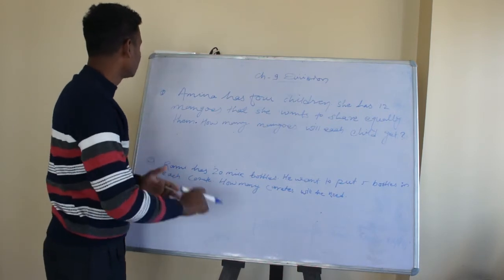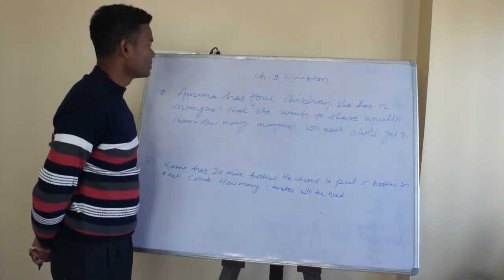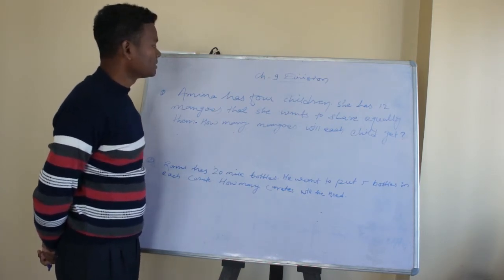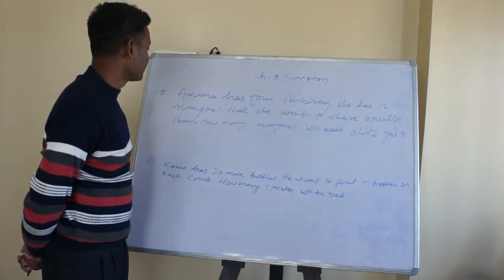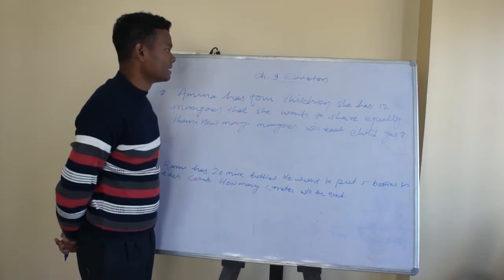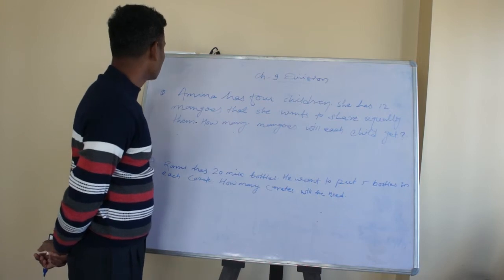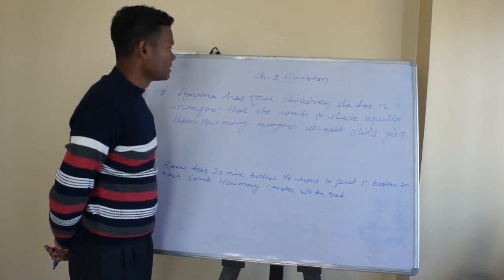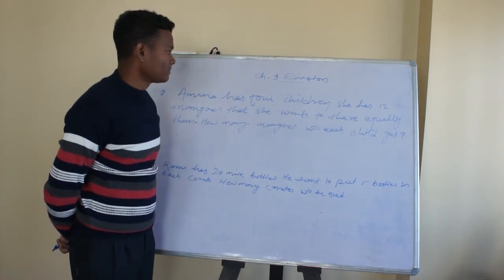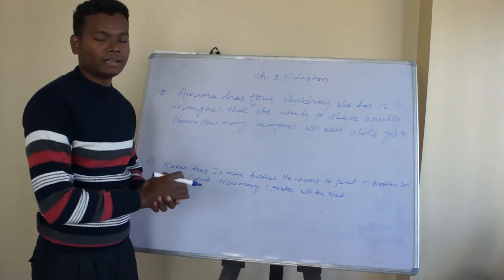Let us see the first example. Aminah has 4 children. She has 12 mangoes that she wants to share equally to them. How many mangoes will each child get? She wants to share among 4 children. How many mangoes will each get? We will divide correctly.